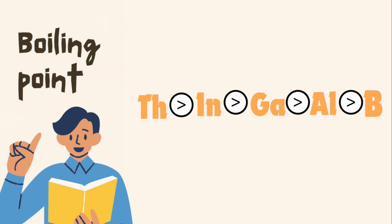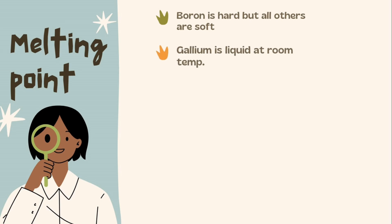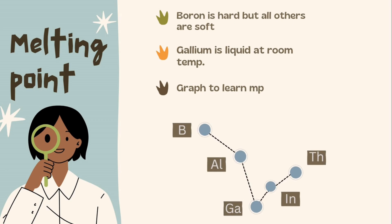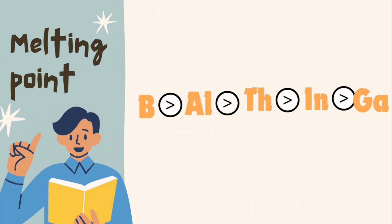The next property is the melting point. Some points to keep in mind: boron is hard but all others are soft. Gallium is liquid at room temperature. To learn the melting point, you can remember this graph. Visual memory is greater than literally cramming things, so I recommend you draw this graph on your own at least four to five times and you will easily be able to conclude the sequence, where boron has the highest and gallium has the lowest melting point.